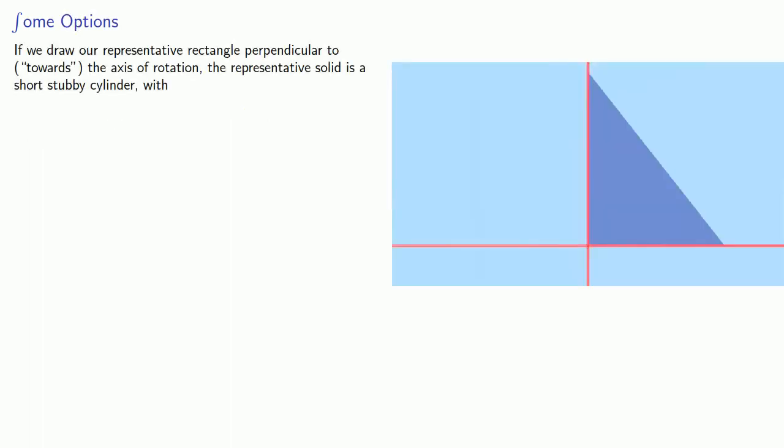We have two primary options. If we draw our representative rectangle perpendicular to the axis of rotation, the representative solid is a short stubby cylinder, with the volume being pi times the radius squared times the height.